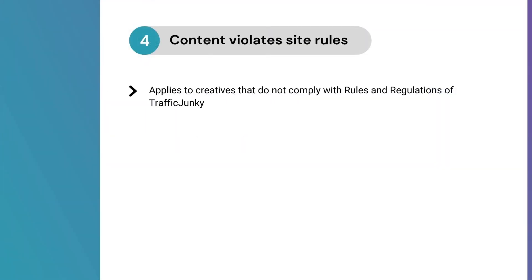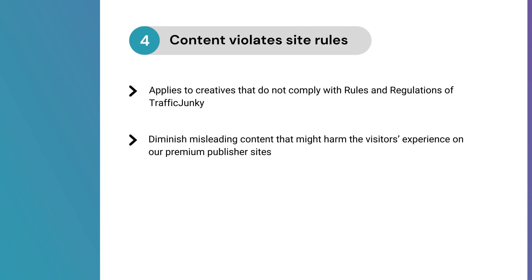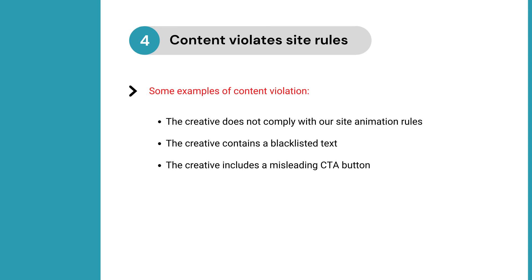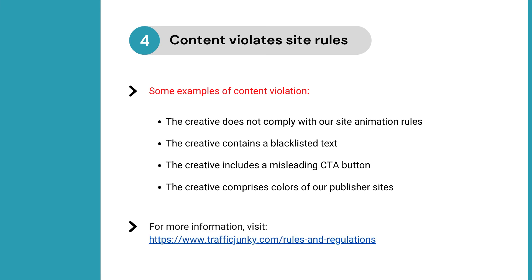Content violates site rules applies to creatives that do not comply with the rules and regulations of Traffic Junkie. We strictly maintain our advertising rules on our platform to diminish misleading content that might harm the visitor's experience on our premium publisher sites. Here are some examples of content violation: the creative does not comply with our site animation rules, the creative contains blacklisted text, the creative includes a misleading call to action button, or the creative comprises colors of our publisher sites. Before uploading another creative, please visit our rules and regulations page for more information.